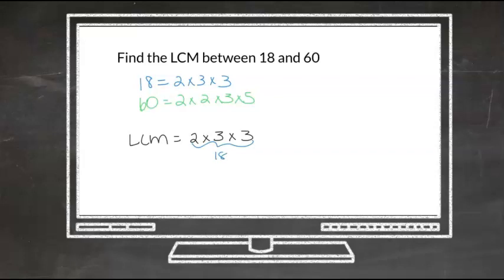Now, how does 60 work into this? When we look at this, 60 has a 2—it's already taken care of. But 60 had another 2, which is not taken care of, so I need to add that one in. 60 has a 3, which is already taken care of. You had the 3 and you had the 2. And then 60 had a 5, which is not taken care of, so I have to add that one in.